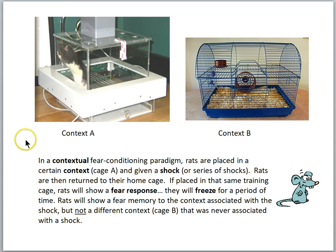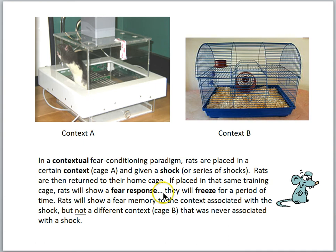In previous lessons we learned about contextual fear conditioning, a paradigm in which rats are placed in a certain context like cage A and given a shock. When returned to that same training cage, rats will show a fear response and freeze. They show a fear memory to the context associated with the shock, but not to a different cage that was never associated with the shock.